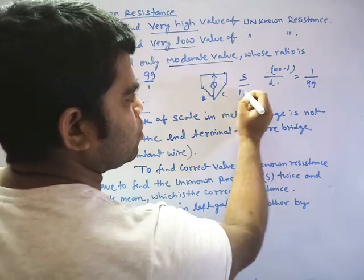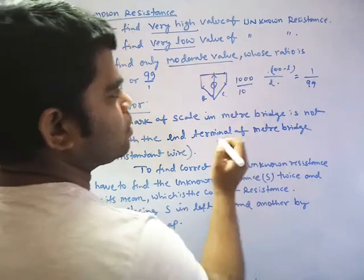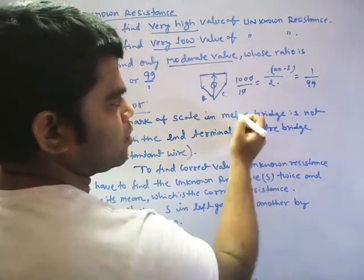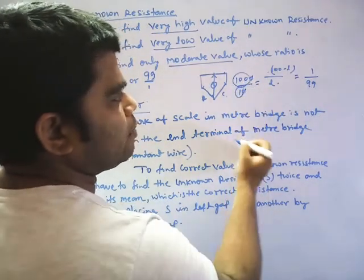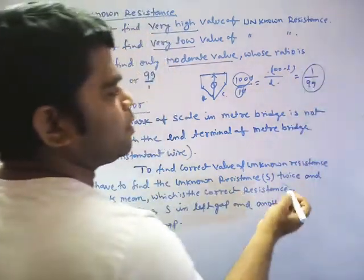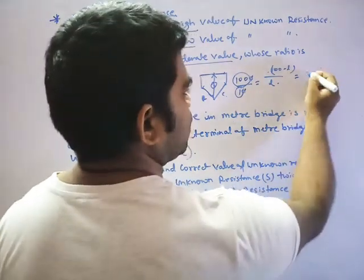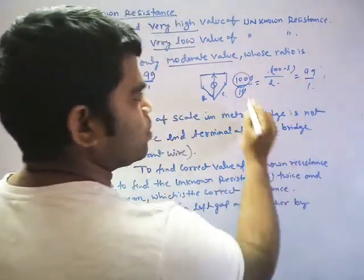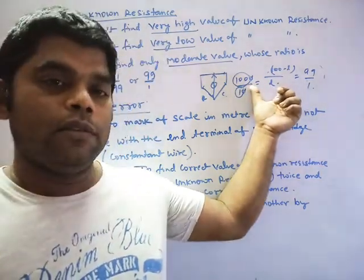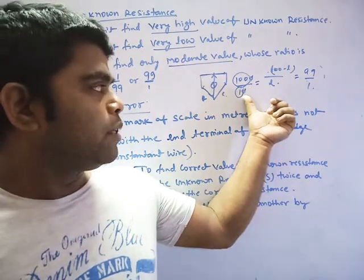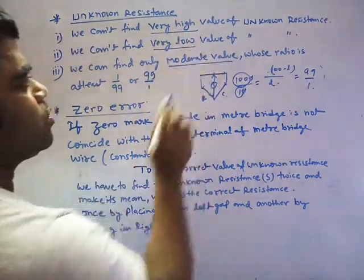For example, your known is suppose 10 and your unknown is suppose 1000. So if I cancel this, suppose your known is 1000. So what is this? 100 by 1. The ratio here is 100 by 1. So it is not possible because the limit is either 1 by 99 or 99 by 1. So it is not matched. That means you will not get any null point if it is very high compared with the known 10.